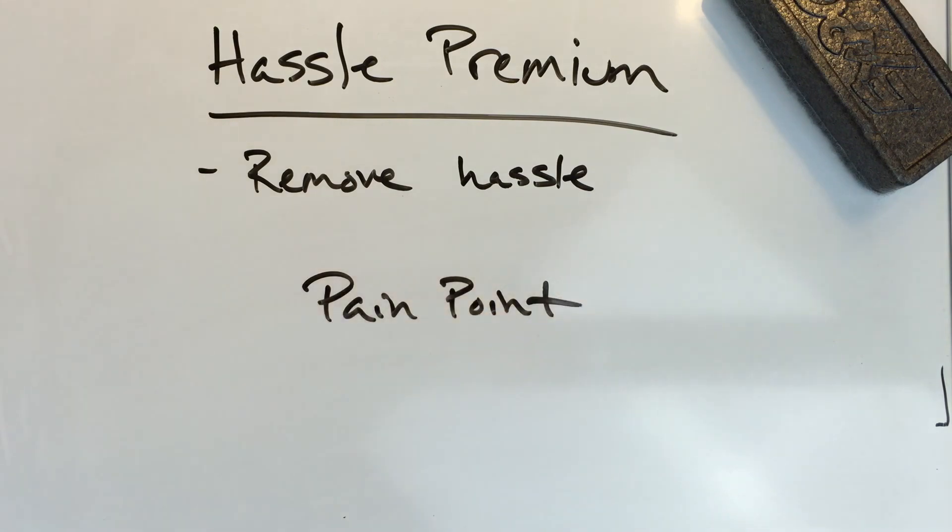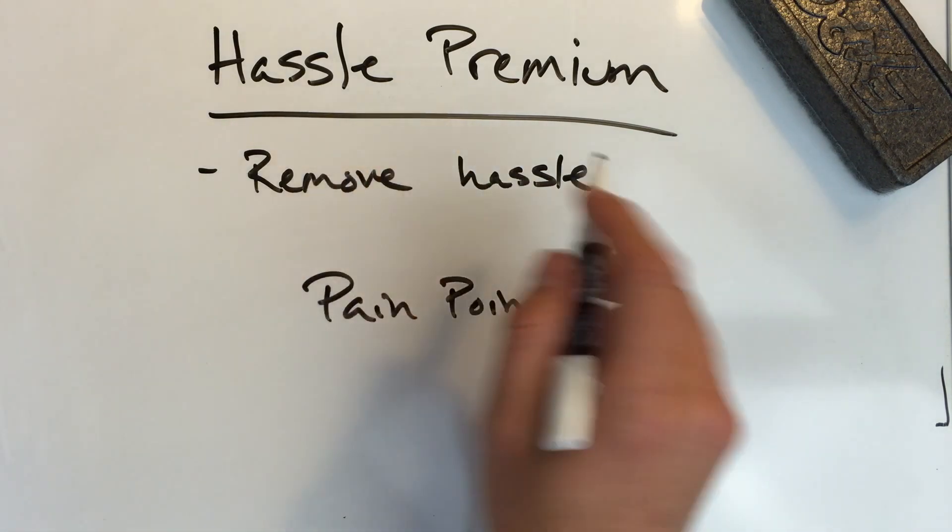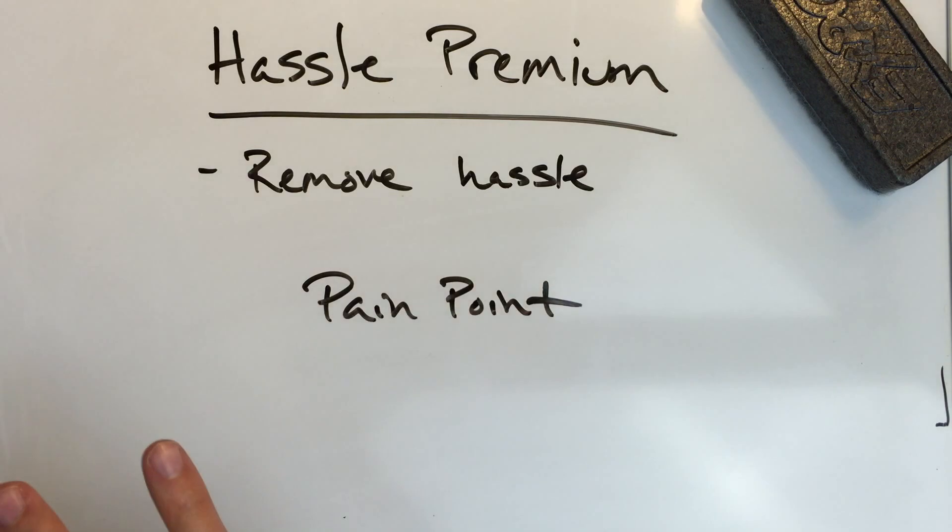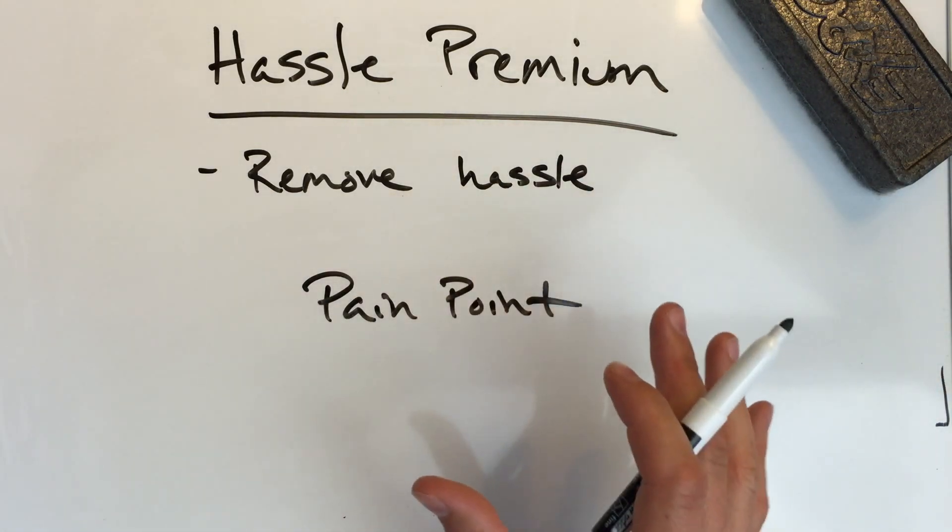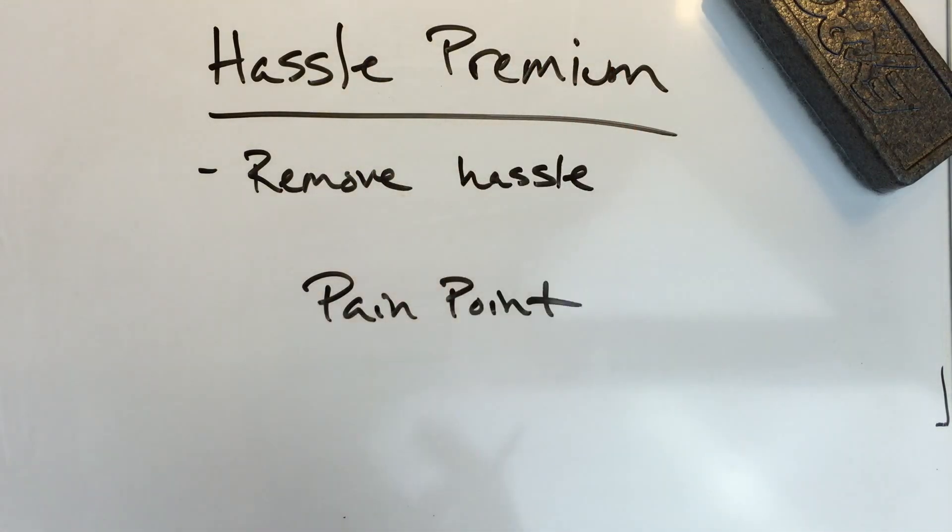They have some sort of struggle and you're trying to alleviate that. The Hassle Premium, I think in the book, is presented as a broader, higher-level business opportunity. But the chapter is short and it ends with: if you see a hassle, chances are there's a business opportunity there. The premium is what you can charge to solve that hassle.